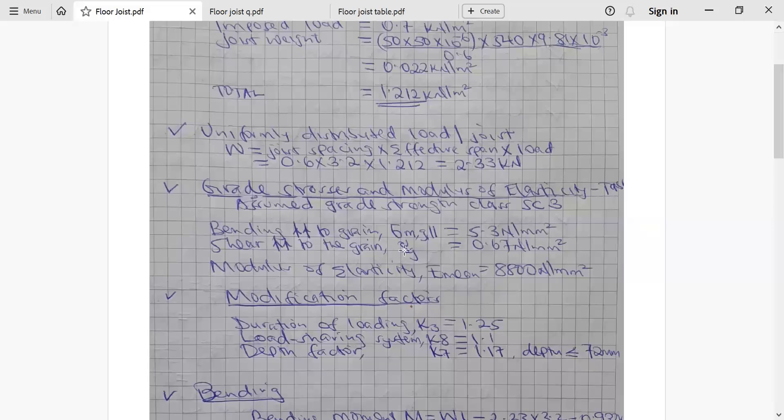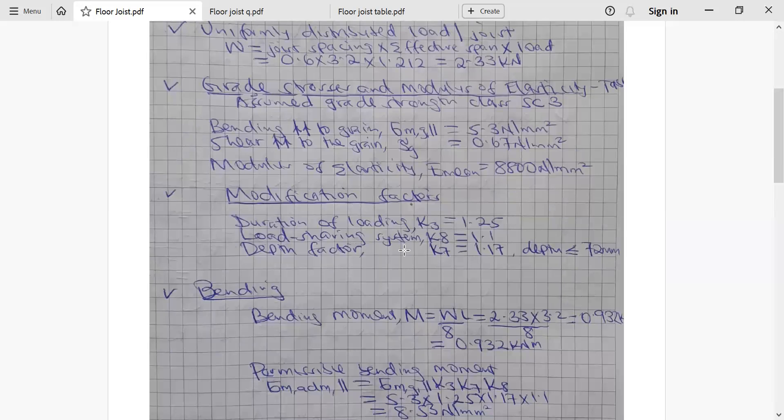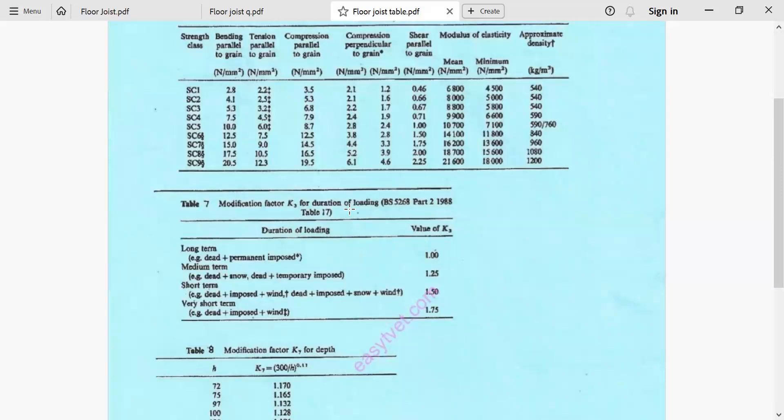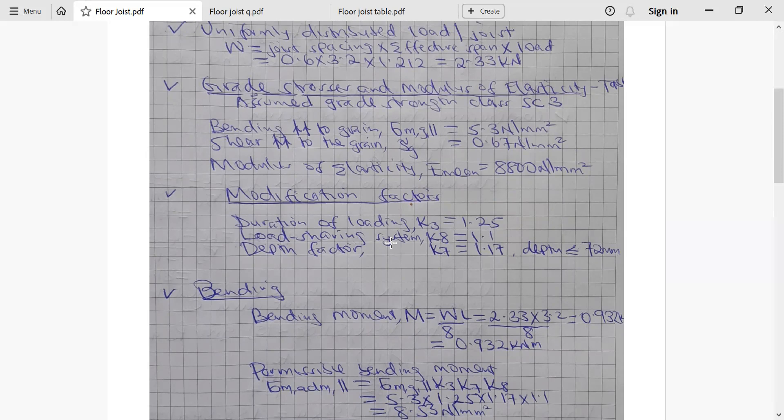Then from there, we go to modification factors. Modification factor number one is duration of loading. We have been told it is medium. If you come to this table 7, you find if it is medium, the modification factor is 1.25. Load sharing system K8 we were given in the question as 1.1. And then depth factor is normally calculated or read from the table.